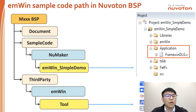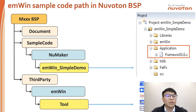If you download the Nuvoton BSP, you will see the folder including documents, sample code, and third party. You can find many kinds of sample code in the sample code folder, including a new maker folder. You can see EN-Wing sample code in the new maker folder. Then you can utilize Eclipse or GCC to open the EN-Wing project.